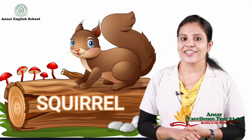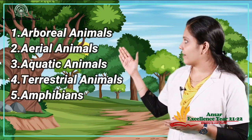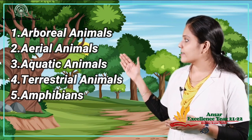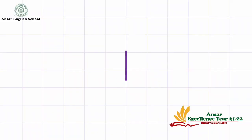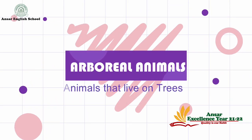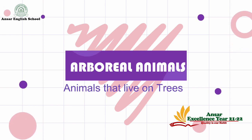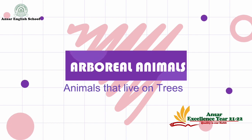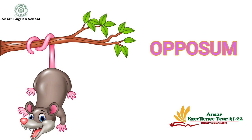So children, we learned about animal habitat. Now let's revise once again: arboreal animals, aquatic animals, aerial animals, terrestrial animals, amphibians. Arboreal animals are animals that live on trees. Examples for arboreal animals: monkey, opossum, squirrel.